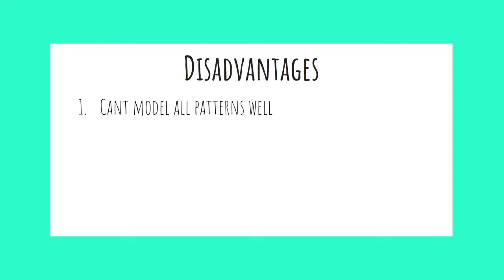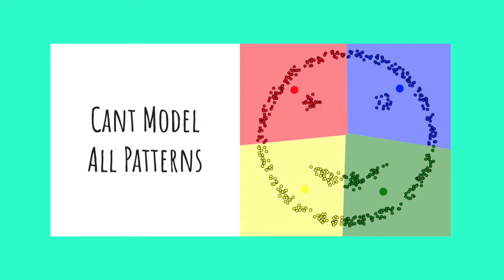k-means can't model all patterns well. You'll see here this dataset creates a smiley face pattern. Ideally, we would like four clusters created — one for each eye, one for the mouth, and one for the circular outline of the face. However, k-means has essentially split this dataset into quadrants, which is not what we would like to see.